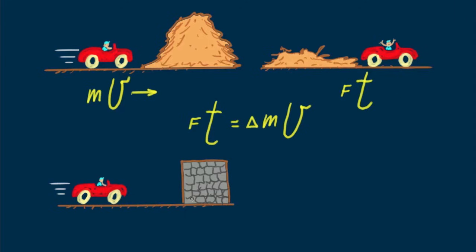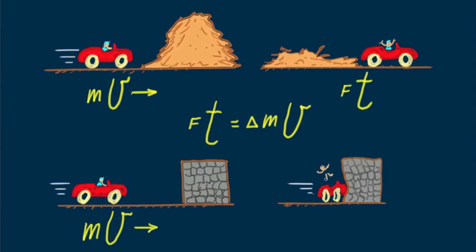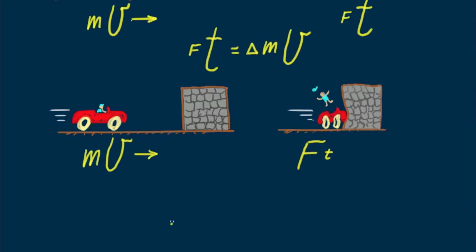But suppose the collision is with a stone wall. Oops! Here the impulse is mostly force because the time during which the impulse occurs is short. Big f t equals delta m v. So minimum force occurs when the time of contact is long.